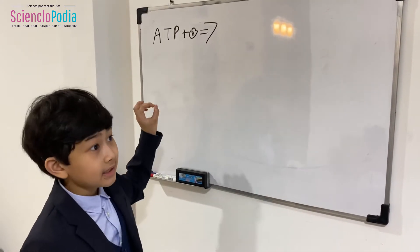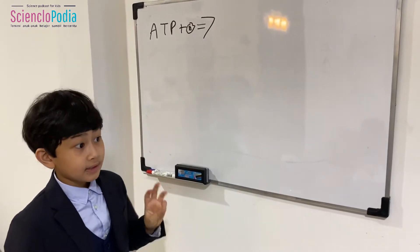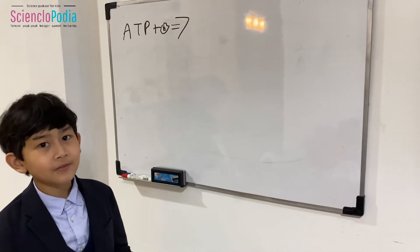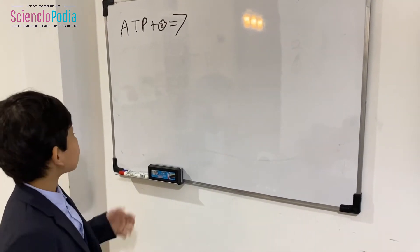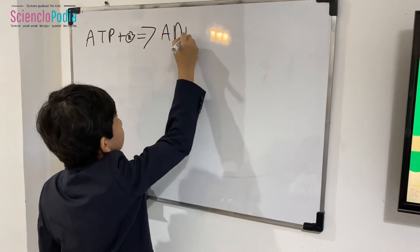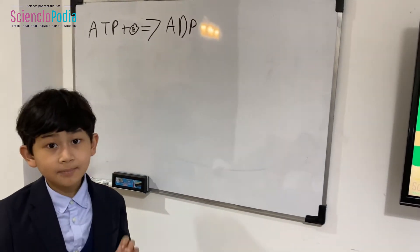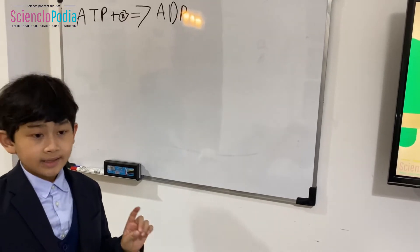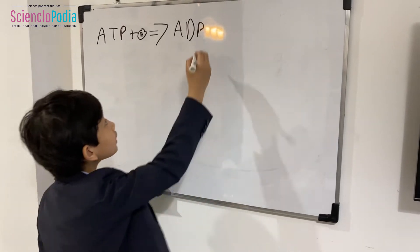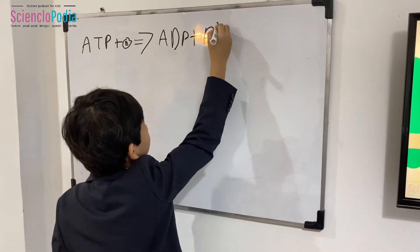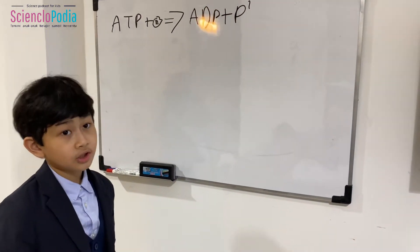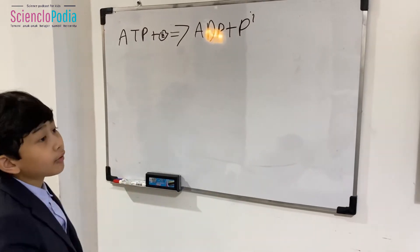The 'T' stands for 'tri,' meaning three, and the 'P' stands for phosphate — so together it's triphosphate. With a tiny amount of energy, ATP breaks down into ADP. The difference between ATP and ADP is that instead of a 'T' there's a 'D,' because the inorganic phosphate becomes that missing phosphate group.